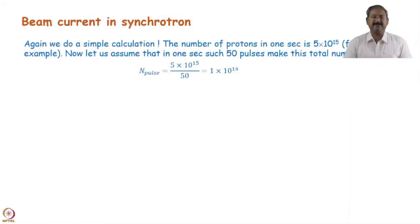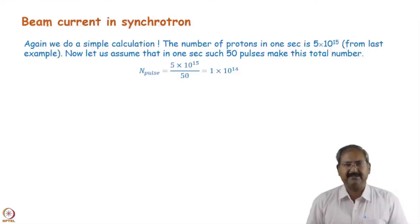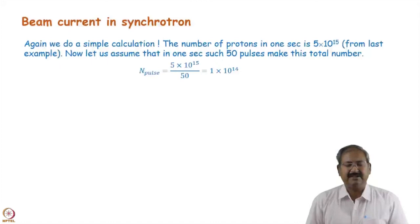Beam current in a synchrotron will be different from what we have calculated. We calculated that if particles are going in a straight path, how many particles or how much charge is crossing through one point in one second — that is the current. But in a circular ring or synchrotron, the thing is different because the revolution time may be much less than one second.